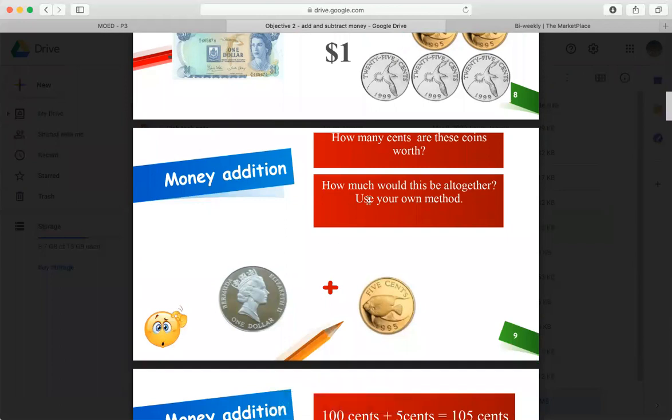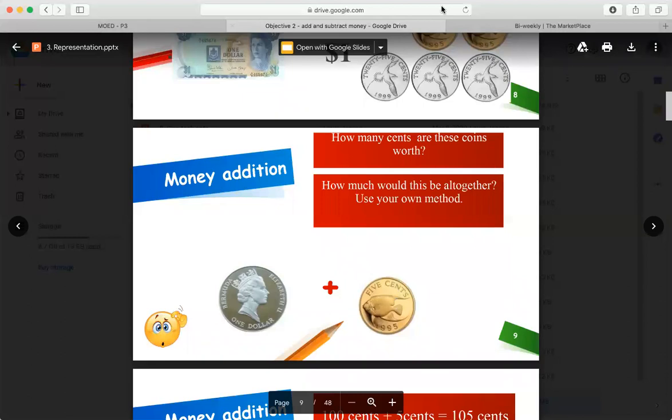Now, let's try this one. How many cents are these coins worth? How much would this be altogether? Well, this is $1 and this is $0.05. So can we add that up?